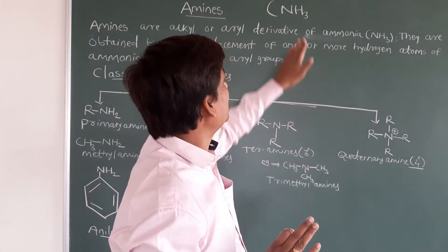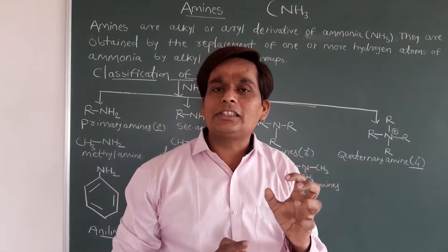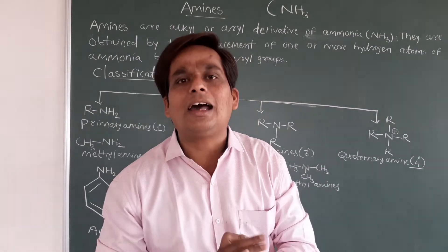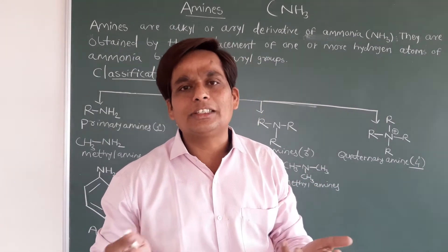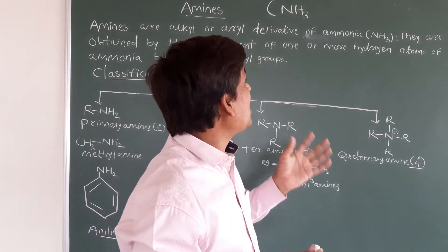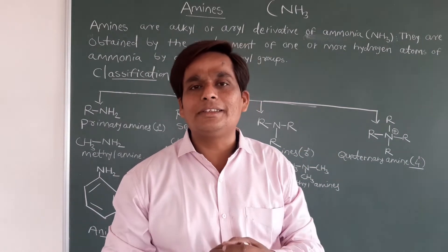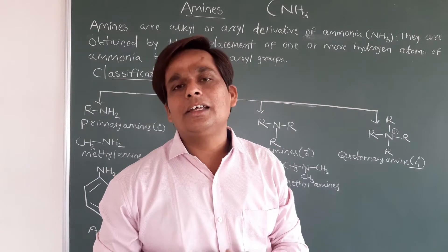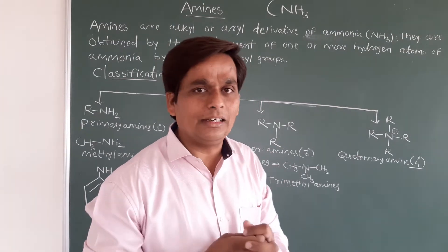Suppose you take NH3, and from that NH3 if you remove one hydrogen and substitute one R group, you get R-NH2, which is nothing but an amine. Instead of the R group, you can add an aryl group — a benzene ring — and that aromatic amine is nothing but aniline.